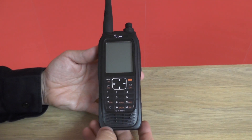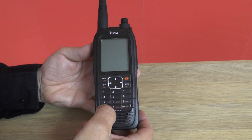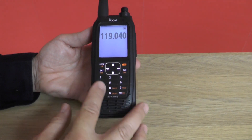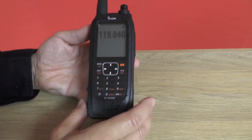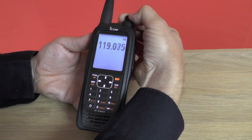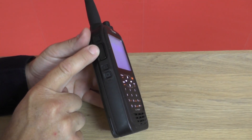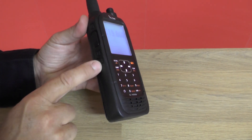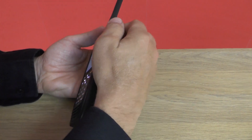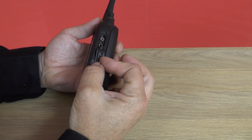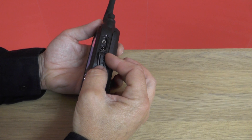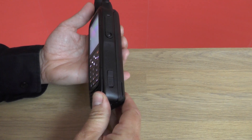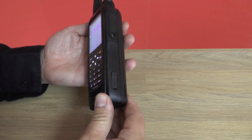Here we have the ICOM IC A25CE. Just switch that on and give you a quick overview of the radio. Here's your entry keypad. You can change frequencies on the top here. On the side you've got your PTT. This button here is for switching the light on and off, and you've got your squelch up and down. On the other side you've got a socket for connecting into an intercom or a headset, and you've also got a DC input so you can run it off a cigar lighter lead from a 12 to 24 volt source.